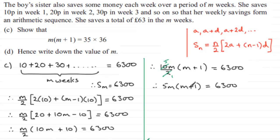And if we divide both sides by 5, you end up with m times (m+1) equals 6,300 divided by 5, which is 1,260. And it just so happens that 1,260 is the same as 35 multiplied by 36, and that's what we had to show.